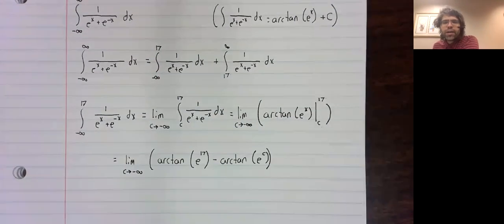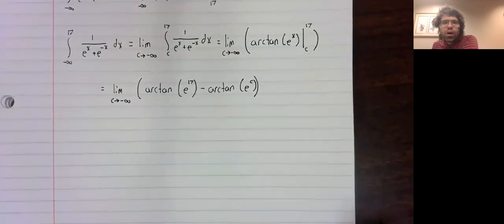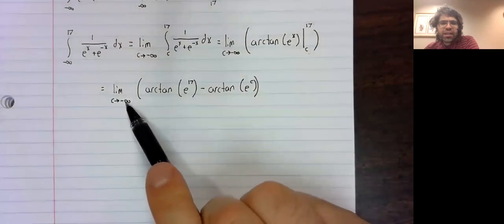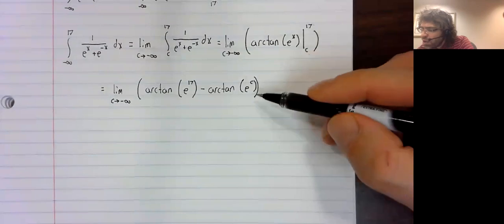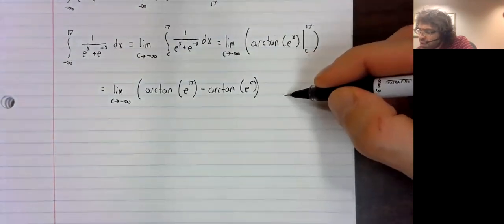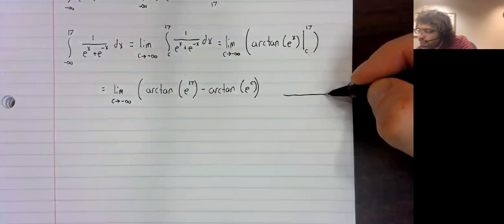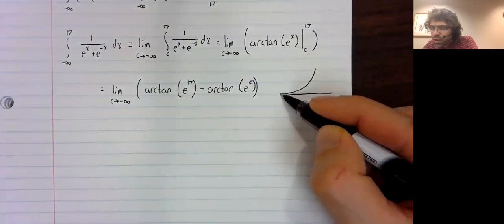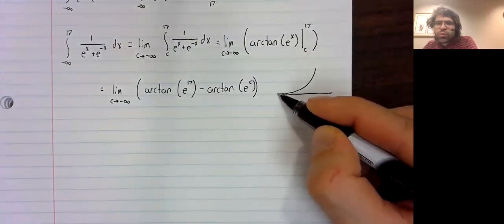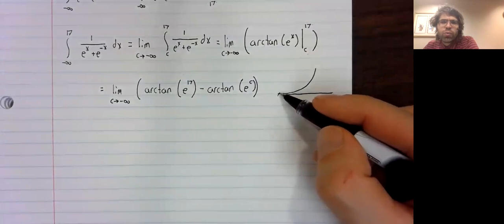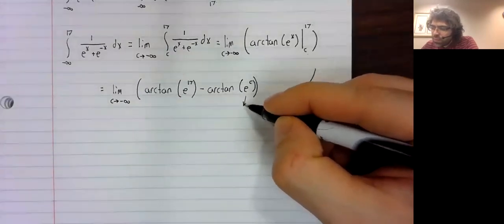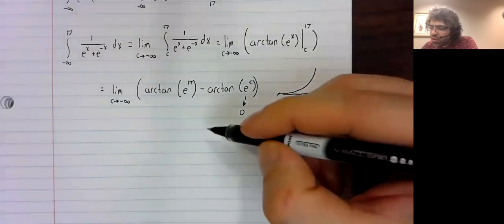And this requires some thought. What happens as C goes to negative infinity? Well, E to the C goes to zero. Remember that the exponential function has a horizontal asymptote when we go to negative infinity. So this goes to zero.